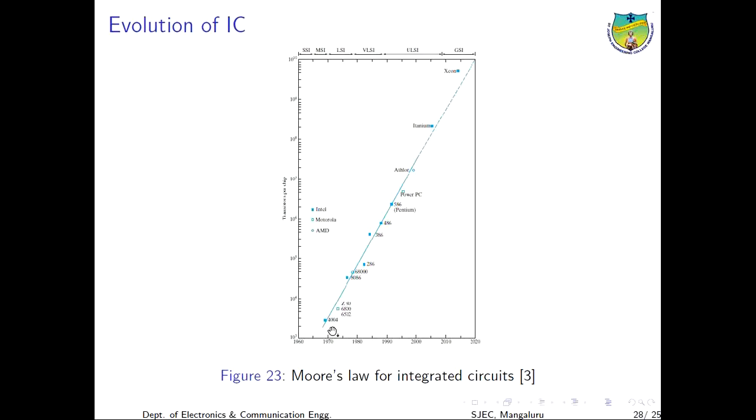The microprocessor in 1970 had around 100 to 1000 devices. You can see here 10 raise to 3. Then we had Pentium in the year somewhere around 1990 to 2000. It had 10 raise to 6 transistors. Then the Xeon processors which have around 10 raise to 8 transistors on a single chip. This is how the evolution of IC took place. Thank you.